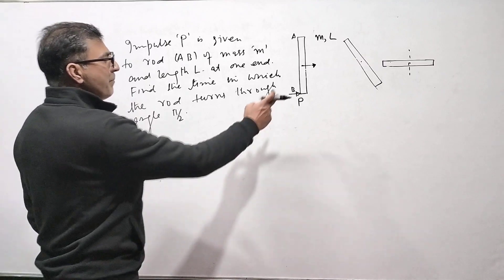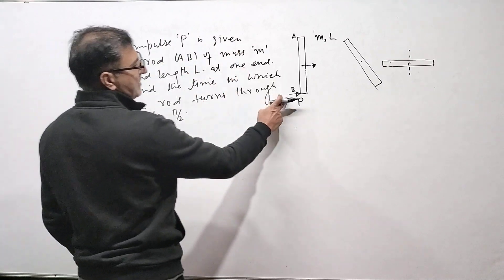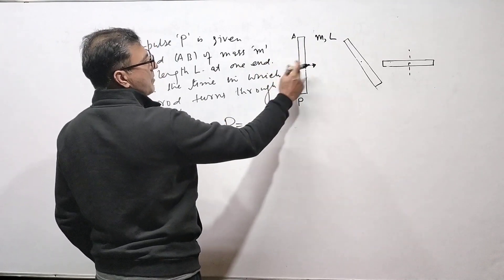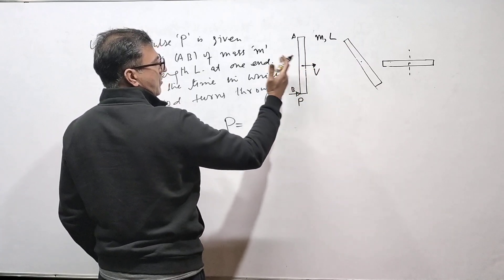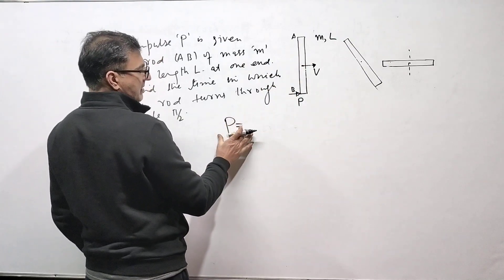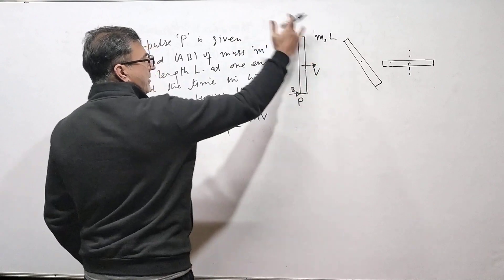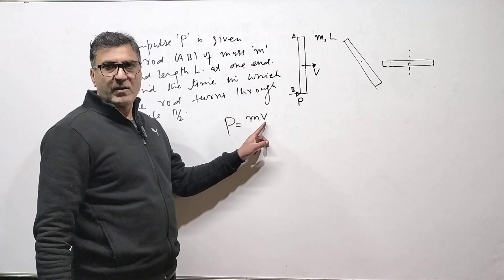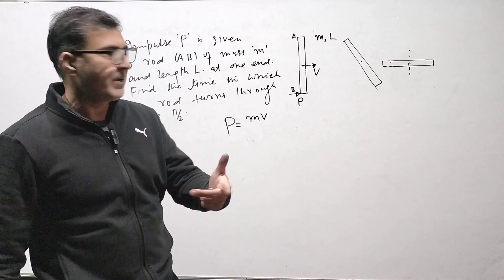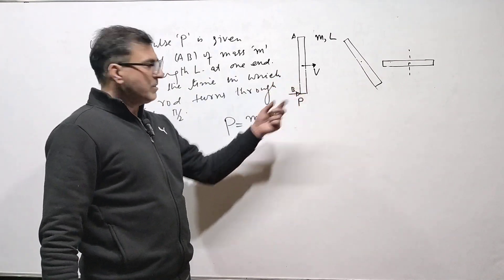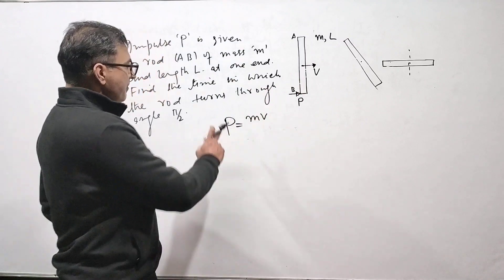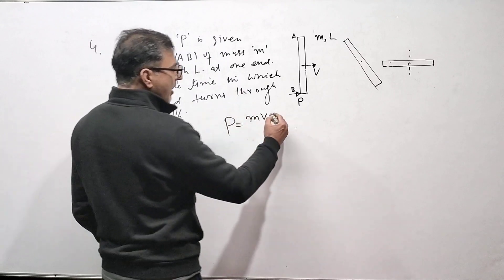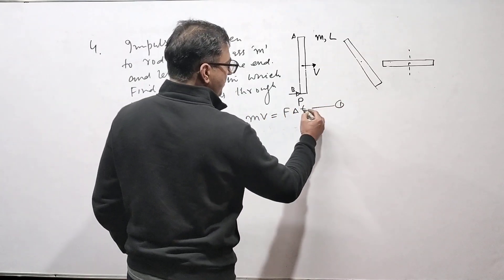Since impulse P is given to the rod and initial velocity was zero, the center of mass gains velocity V, so P = MV. The force F that delivers this impulse is F = P/ΔT. This force also creates a torque about the center of mass: τ = F·(L/2). By the angular impulse-momentum theorem, F·(L/2) = ΔAngularMomentum/ΔT, and since initial angular momentum was zero, this gives angular momentum = P·(L/2).